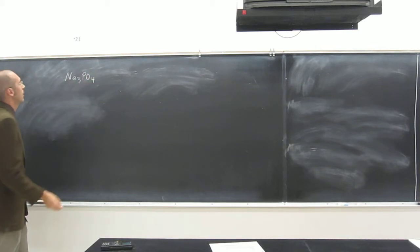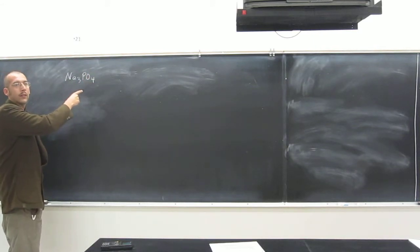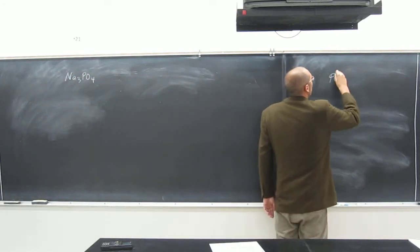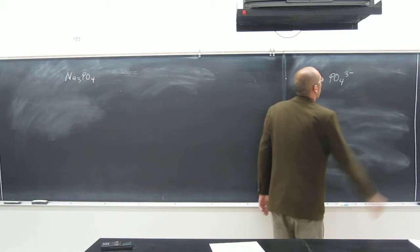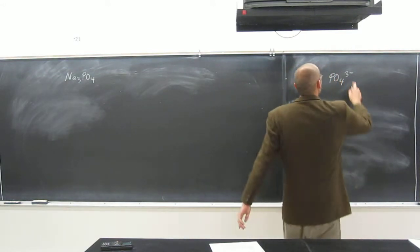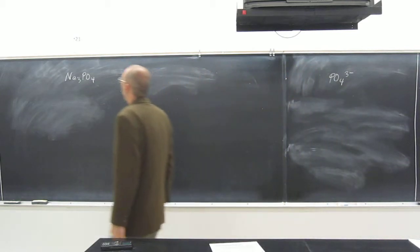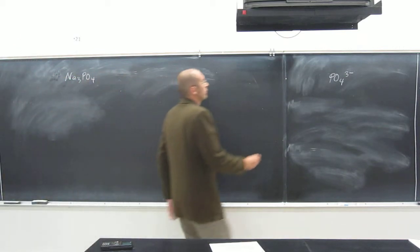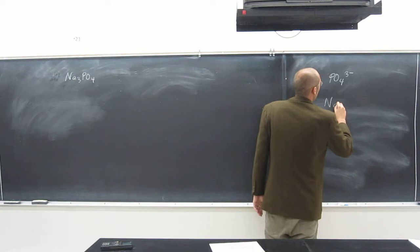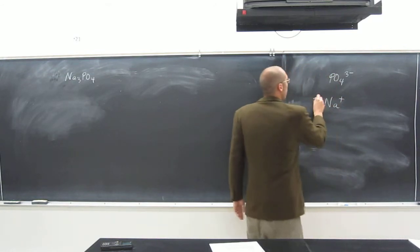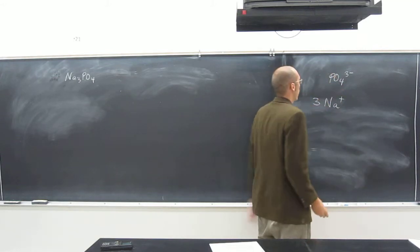So sodium phosphate, the reason you know that it looks like this is because you know the polyatomic phosphate, PO4 3 minus. So this is one of the polyatomics that you have to know, okay? So the 3 minus there. And you know also that sodium is in group 1, right? So it's a plus 1 charge. So in order to put these two things together, you're going to need three of these to every one of these, right?